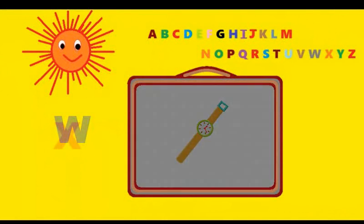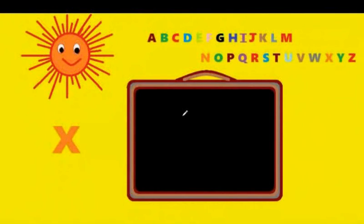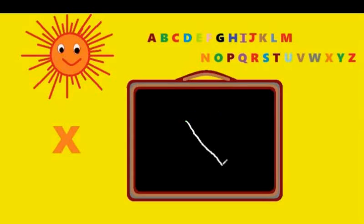X. You just have to draw a cross. Take a line down from left to right, then a line from right to left — they have to cross each other. A line down and a line down from the other side. That's X. X is for xylophone.